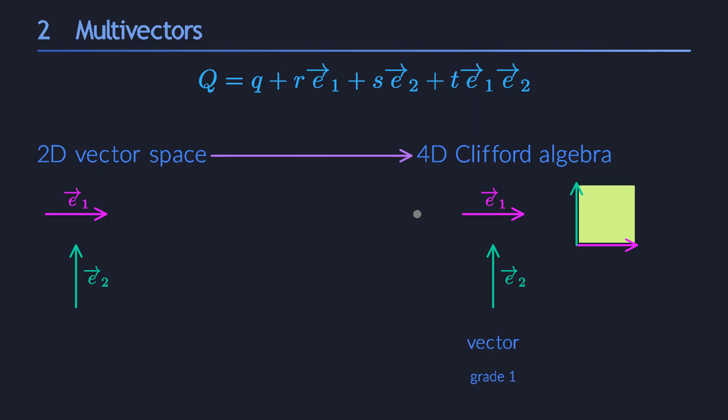This can be confusing, and that's why, in practice, everyone will typically reserve the word vector only for the objects coming from the original 2D space. They turn into the elements of grade 1 in our new bigger space. For all the other objects, we will instead use words like bivector, trivector, scalar, pseudoscalar and multivector to avoid confusion.